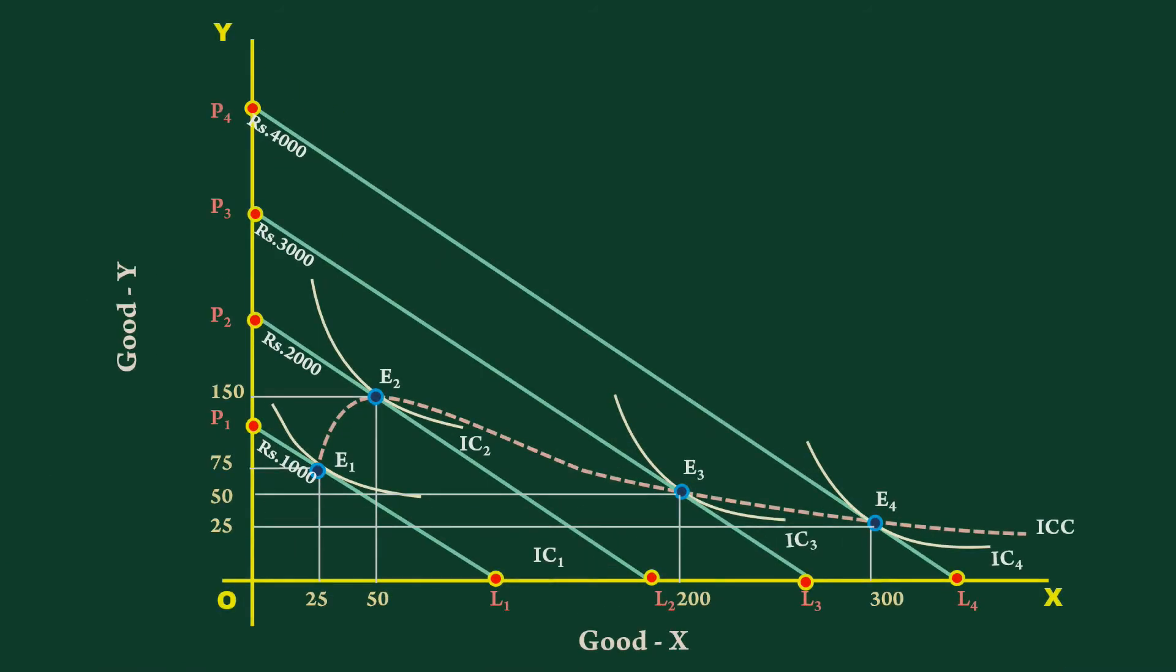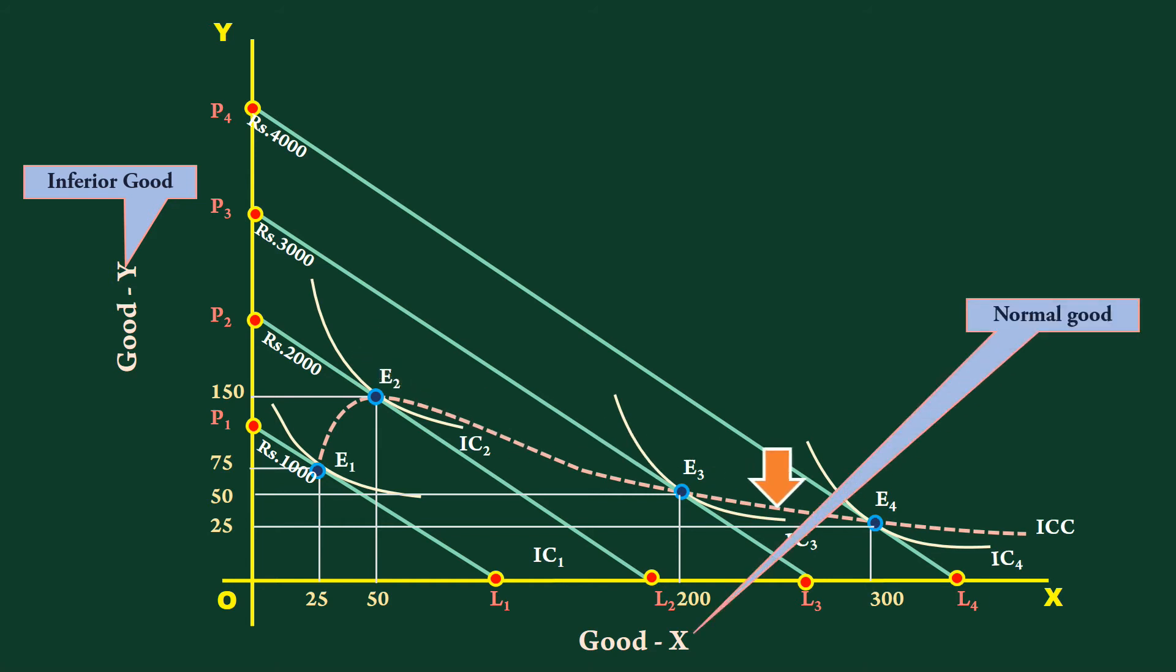When inferior good Y is along the Y axis and normal good X is along the X axis, the income consumption curve bends downward towards the X axis. The shape of the income consumption curve tells us about the type of good shown along the two axes.